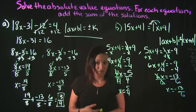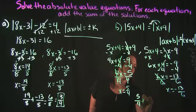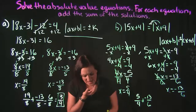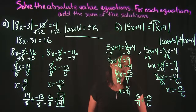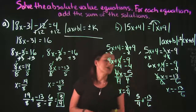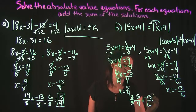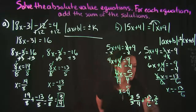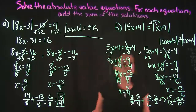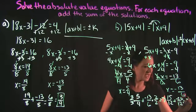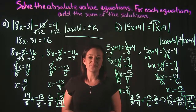Again, this problem wants us to find the sum of our solutions, so we take 5/4 + (-13/6). To add fractions we need common denominators — the common denominator of 4 and 6 is 12. Multiply 5/4 by 3/3 to get 15/12, and multiply -13/6 by 2/2 to get -26/12. Adding those together gives us -11/12 as our final answer.